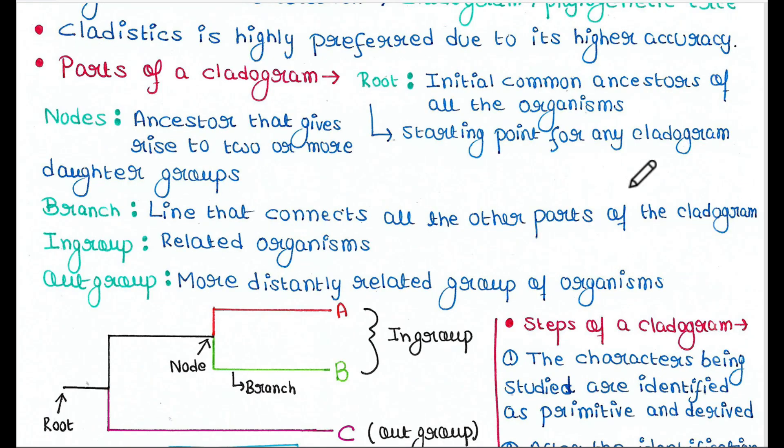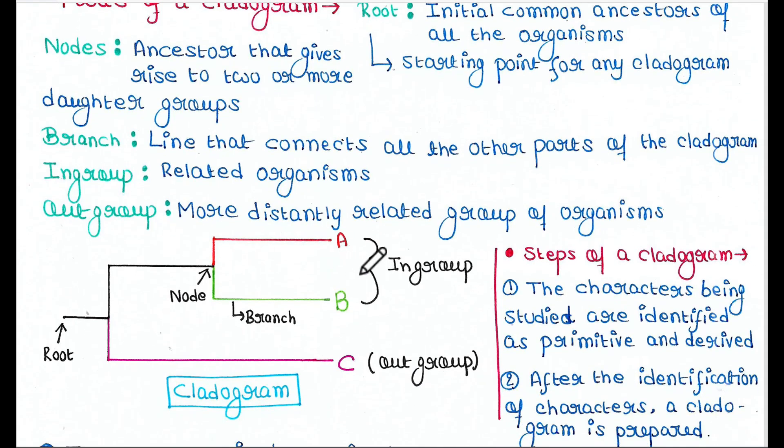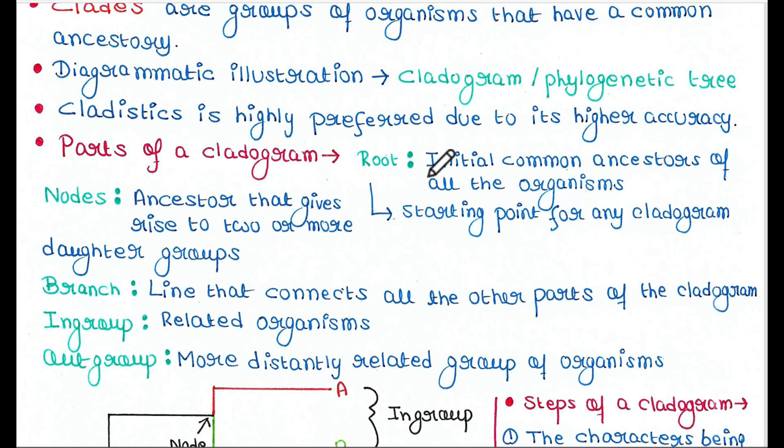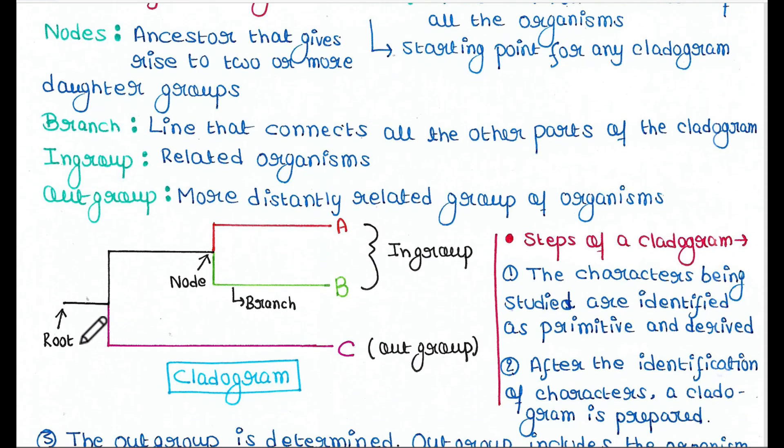Let's talk about the parts of a cladogram. So this is basically a cladogram. Here is the root. Root is initial common ancestors of all the organisms and is the starting point for any cladogram. Here, A and B are very much similar and are related organisms, so they are called in-group.